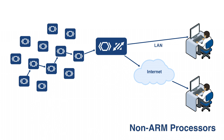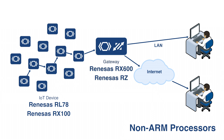If you're considering a non-ARM processor, a good option for the IoT device is the Renesas RL78 or RX100 series. And for the gateway, the Renesas RX600 or RZ series. Either way, new processors are appearing on the market all the time with more flash memory, more RAM, and always at a lower price.